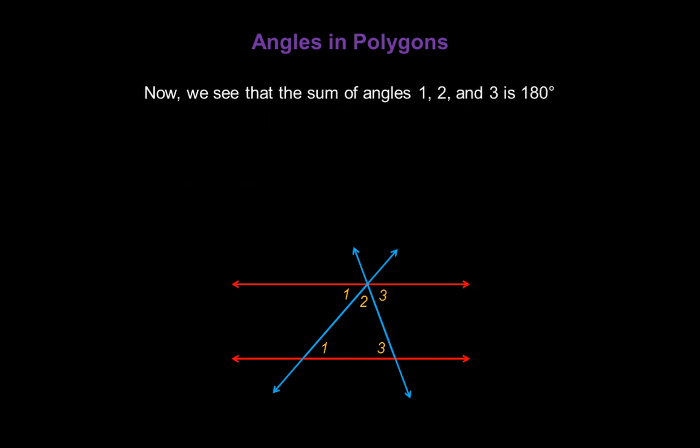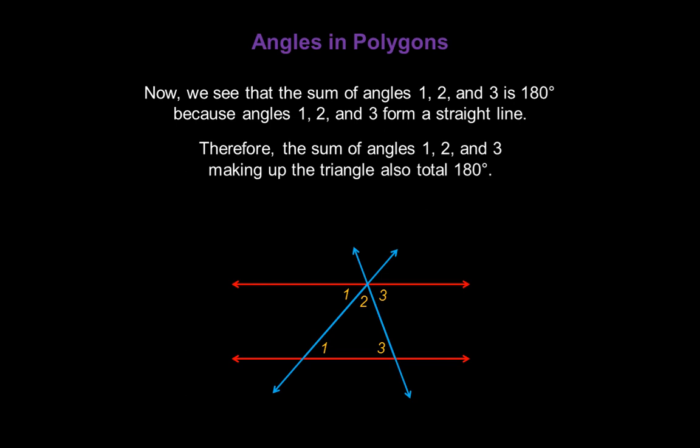We see that the sum of angles 1, 2, and 3 have to be 180 degrees because angles 1, 2, and 3 form a straight line. And a straight line is a straight angle of 180 degrees. Therefore, the sum of angles 1, 2, and 3 making up the triangle also total 180 degrees.